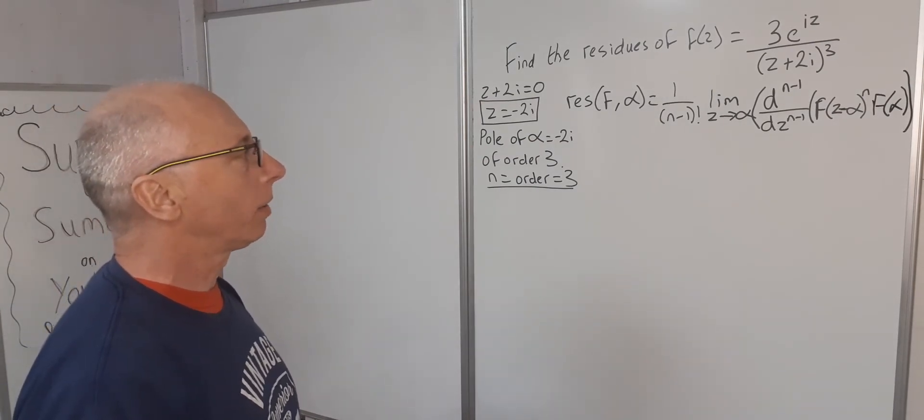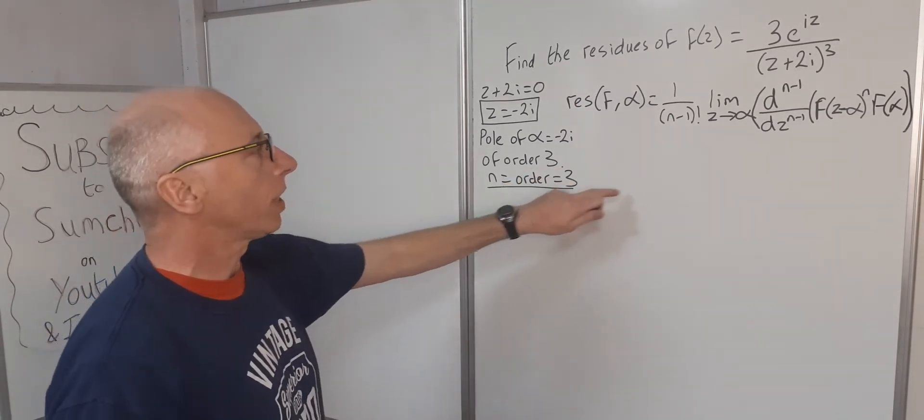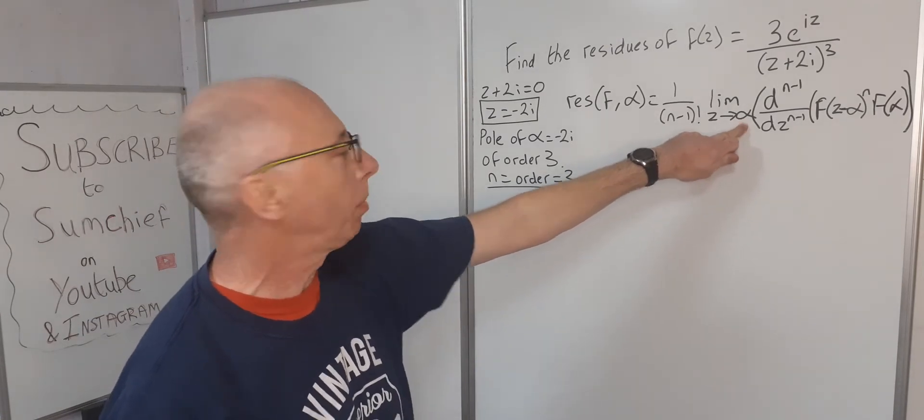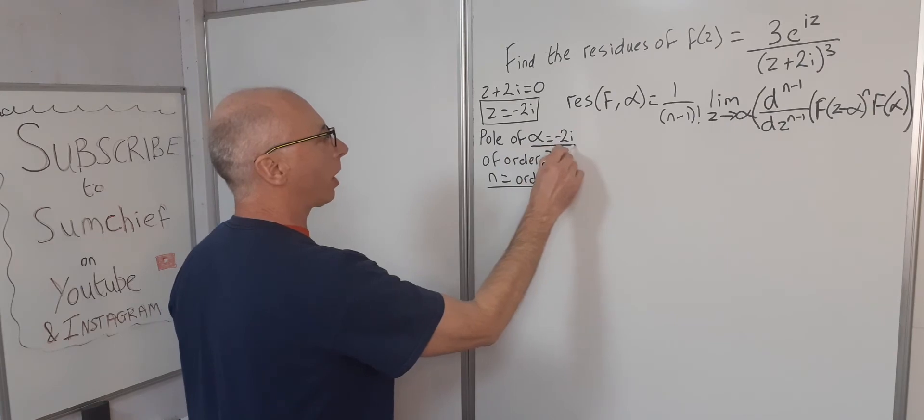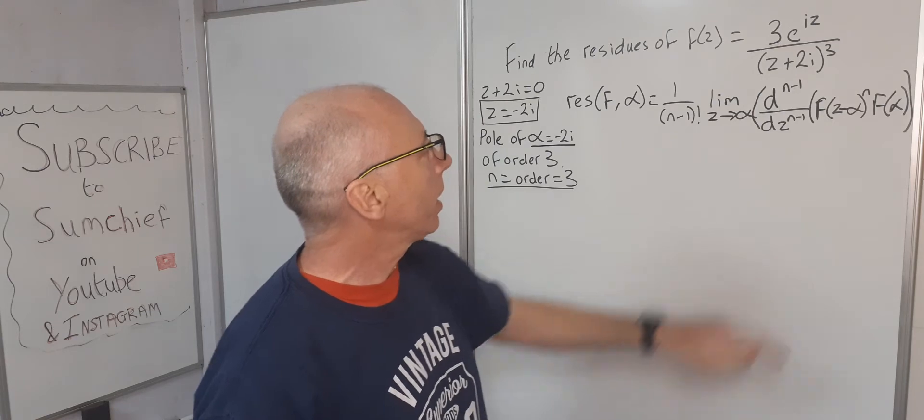Let's see what we can do now. We know what the n is. The n is 3, so we can plug that in, that's no problem. We know our alpha, that's where the pole is. That's the pole at alpha equals -2i. So we're pretty much ready to go and plug all this in.